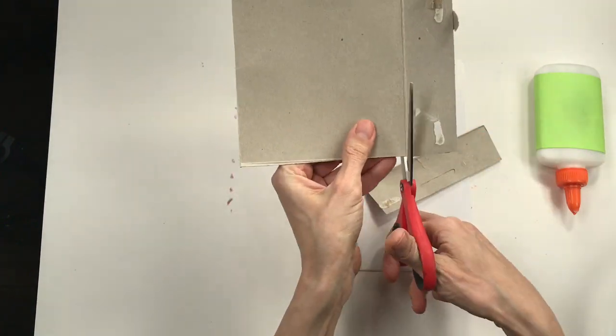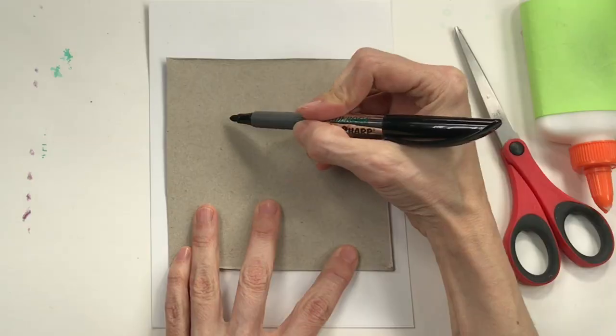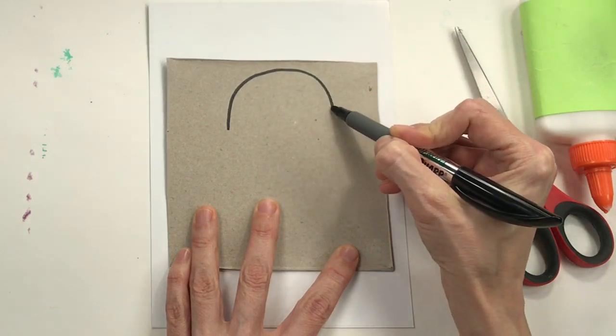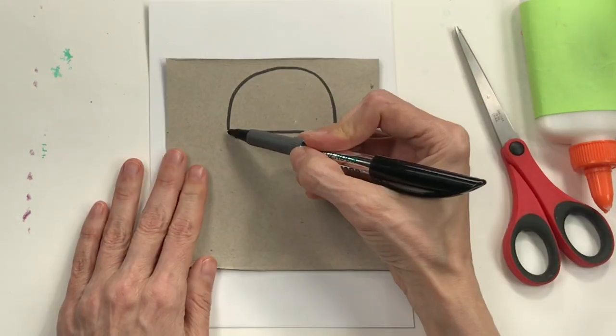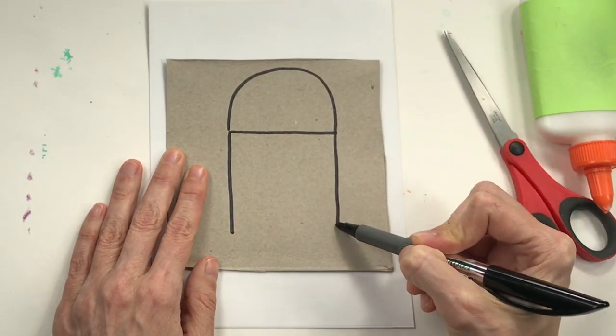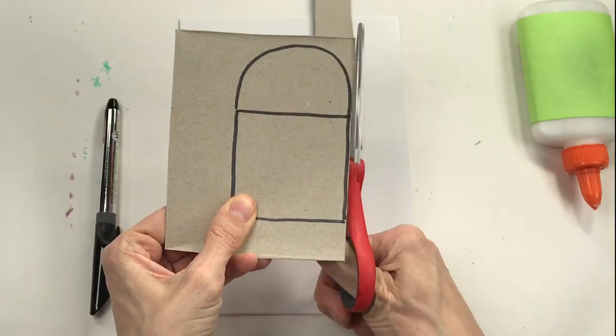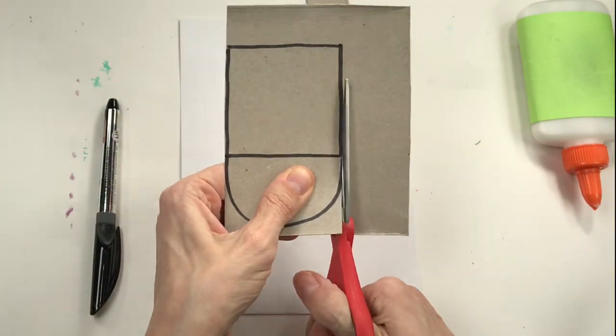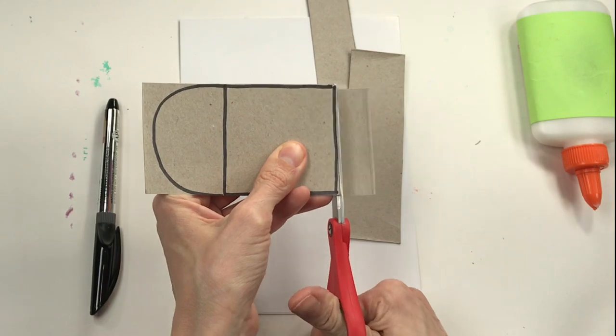Begin by cutting apart the cereal box so you have a nice flat piece of cardboard to work with. Then let's start with the top of R2's head. It's a semi-circle and then the bottom is a rectangle. Draw nice and big and then go ahead and cut it out.